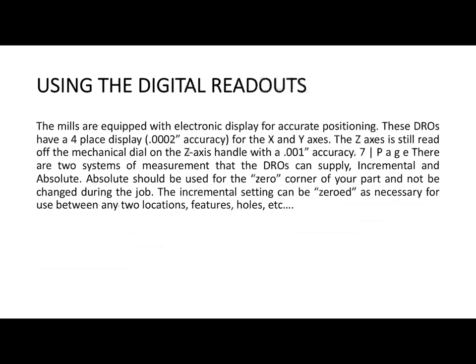Using the digital readouts — there is a digital gauge connected to the milling machine which will tell you the coordinates of X, Y, and Z. If you are not sure whether you have reached a certain distance, you can adjust the display accordingly and it will tell you how far you are from the origin in the X-axis, Y-axis, and Z-axis.